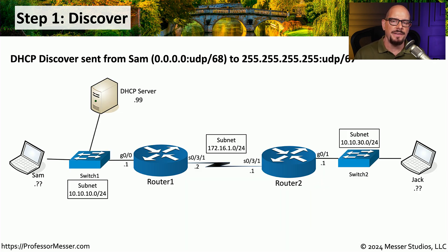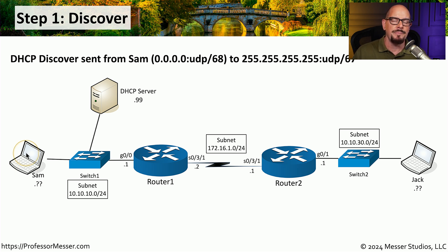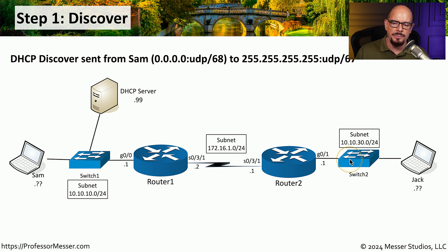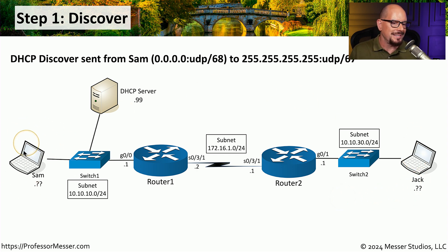Let's step through all four of those phases from the perspective of this network diagram. On this diagram, we have Sam who has just connected her laptop to the network and she needs to receive an IP address. On her local subnet, you can see there is a single DHCP server, and there are other devices on this network not shown. There is also a router connected across a wide area network to another router, where there's a separate switch and another workstation owned by Jack.